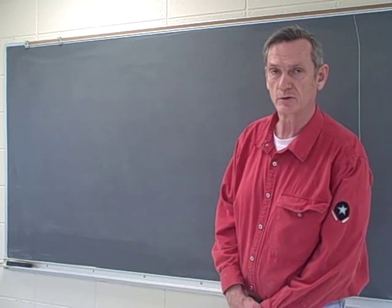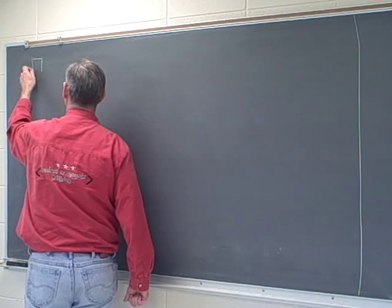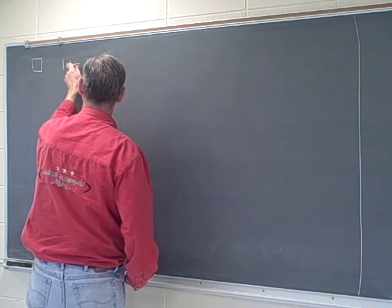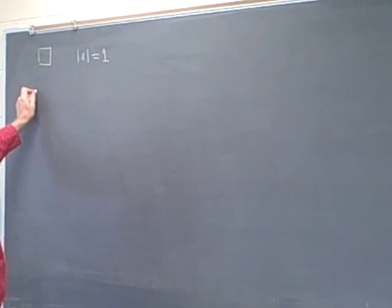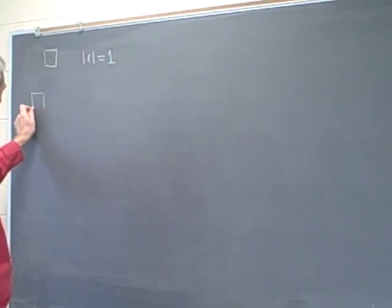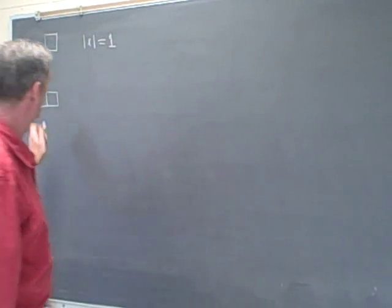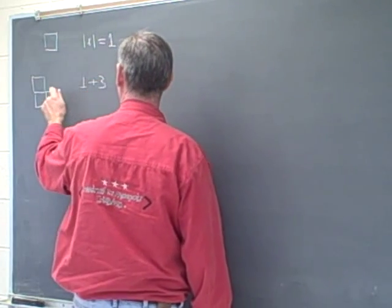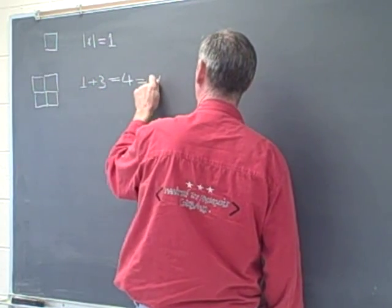The first thing I'm going to do is draw a one-by-one square. That's one unit by one unit, so we have one times one is equal to one. The next thing I want to do is add three to that one-by-one square, and the three I'm going to add won't be three squares in a line — they're going to be three squares in this L shape here. So if I take one plus three, I get four, which is the same thing as two times two.